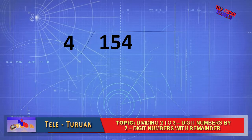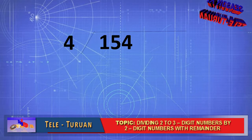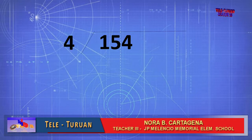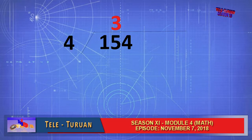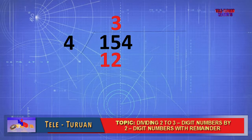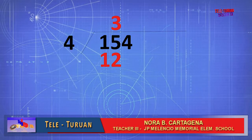154 divided by 4. The first step is to divide the dividend by the divisor. Let's start by dividing 1 by 4. Can you divide 1 by 4? No. So let's divide 15 by 4. 15 divided by 4 is equal to 3. Put 3 above the number 5. Next step: multiply 3 by 4. What is the answer? 12. Write 12 below 15. Then subtract: 15 minus 12. The correct answer is 3.